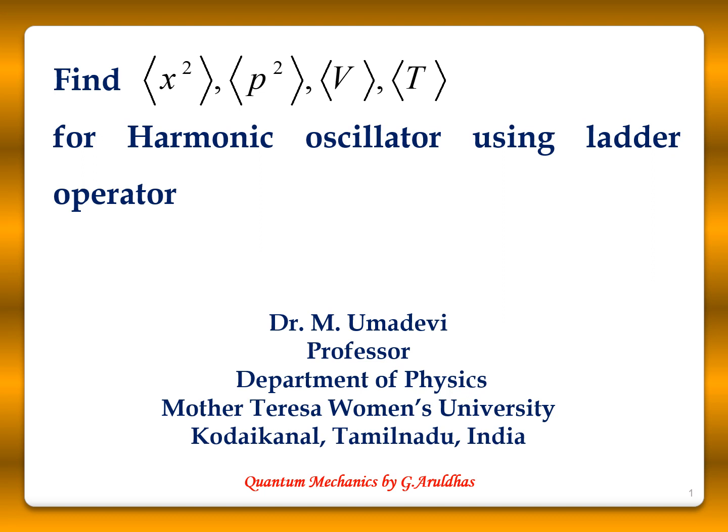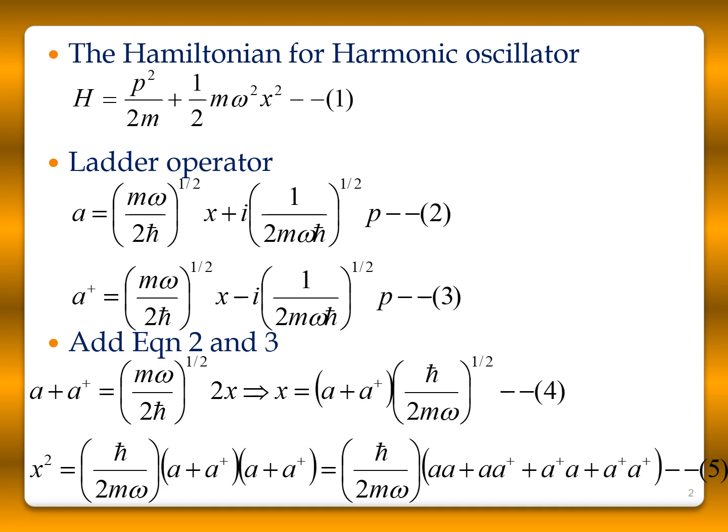We will see how to find the expectation value of x squared, p squared, kinetic energy, and potential energy for a harmonic oscillator using ladder operators. We know the Hamiltonian for the harmonic oscillator is written as H = p²/2m + ½mω²x², where ω is the frequency of the harmonic oscillator, p is the momentum, m is the mass, and x is the position.